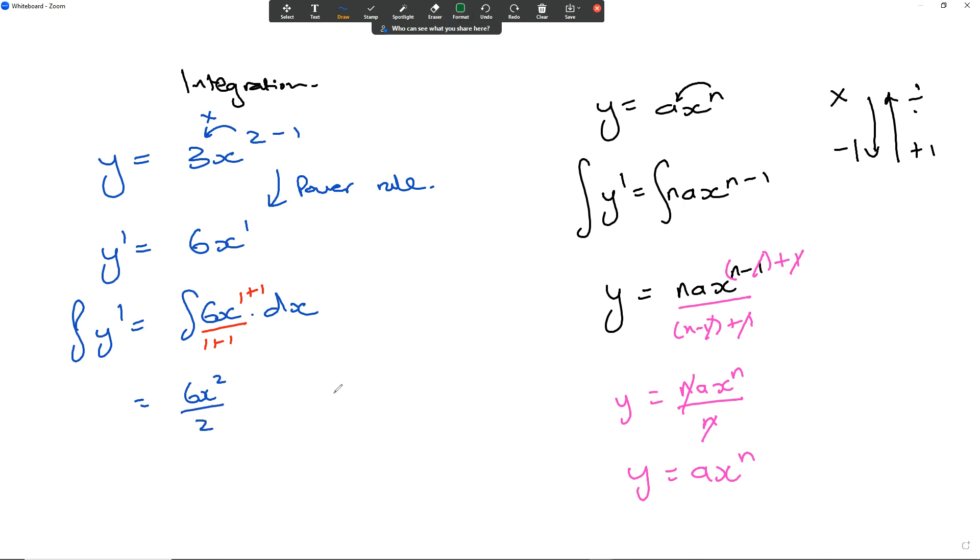Every time we do this, we add an unknown constant, c. We keep having this unknown constant c for now, because this is an indefinite integral. It doesn't have a starting or ending point. This will become 3x squared plus c, and we leave it like that.